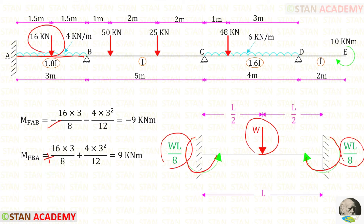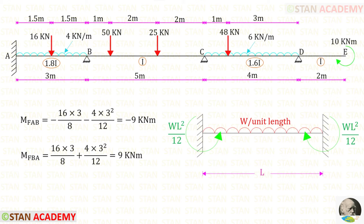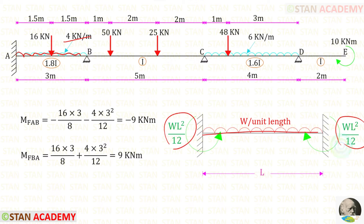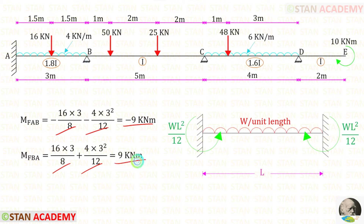Here W is 16 and L is 3. Now let us take the uniformly distributed load of 4 kN per meter. If the UDL is acting for the full span, the formulas to find the fixed end moments are WL²/12 and WL²/12. Since this moment is acting in the anti-clockwise direction, it will be negative. Here W is 4 and L is 3. After adding these two, we will get minus 9 kN·m, and after adding the other two, we will get positive 9 kN·m.